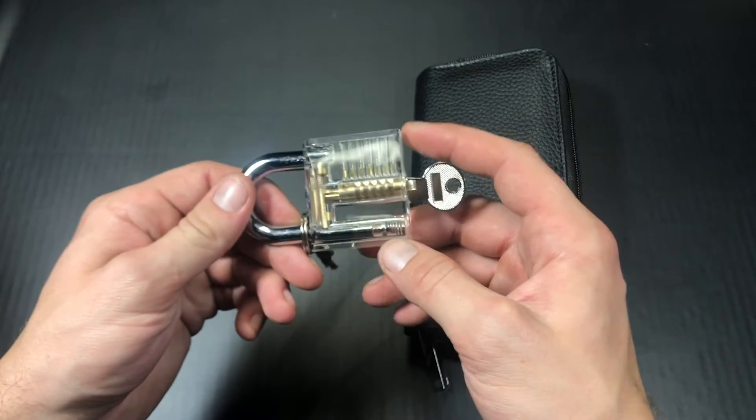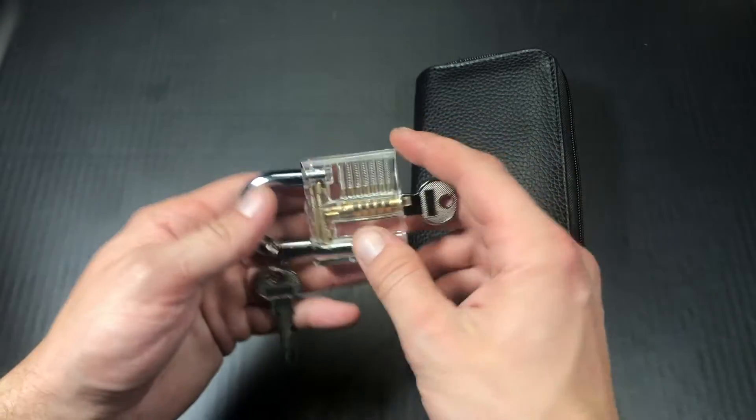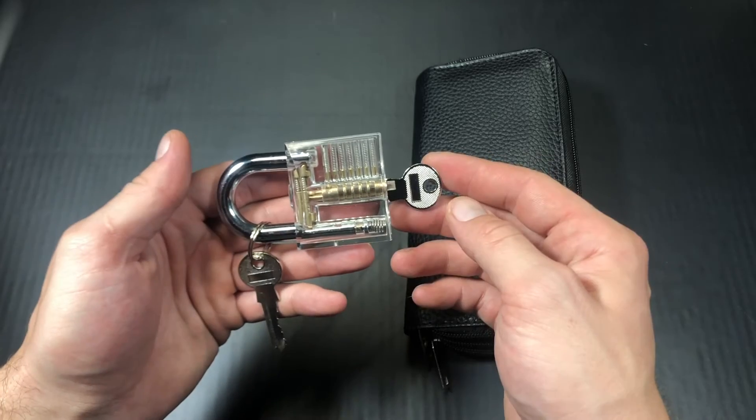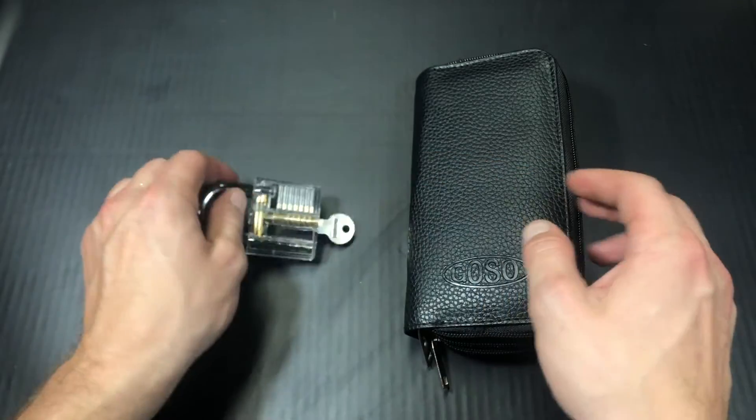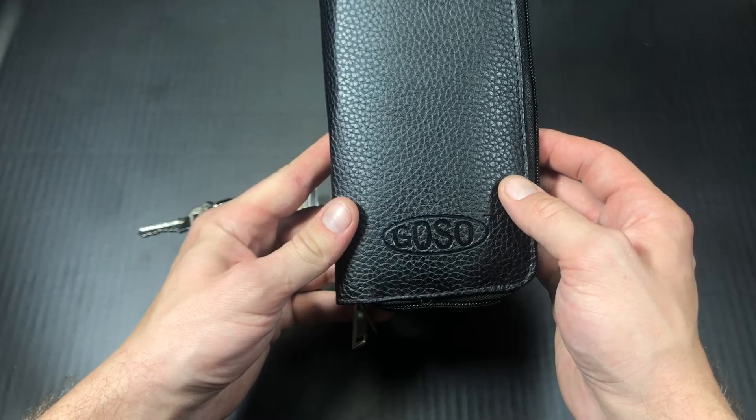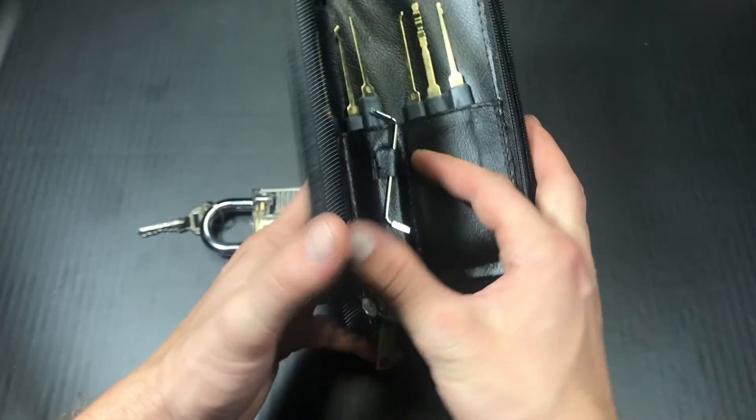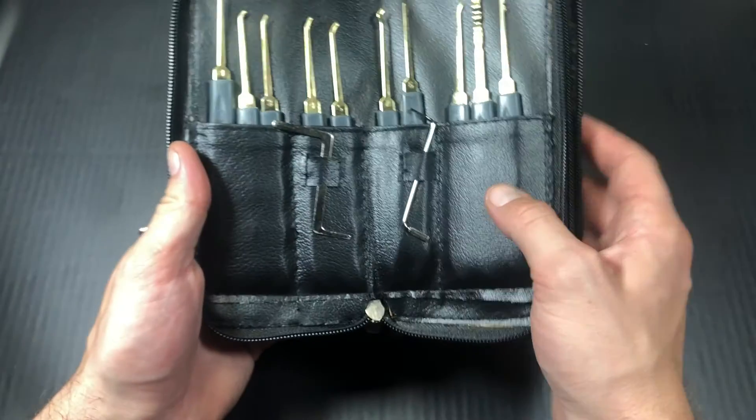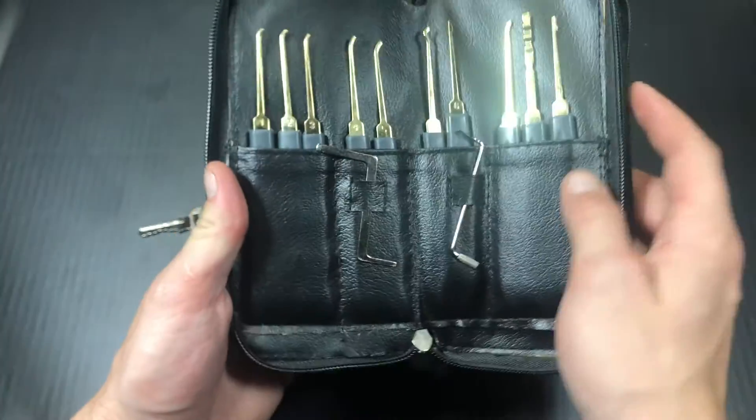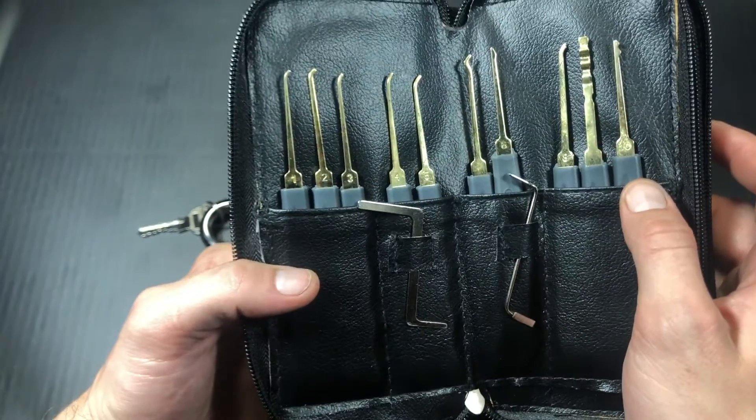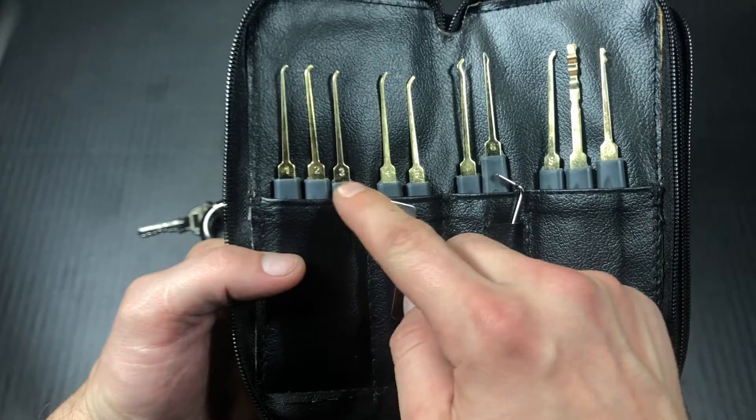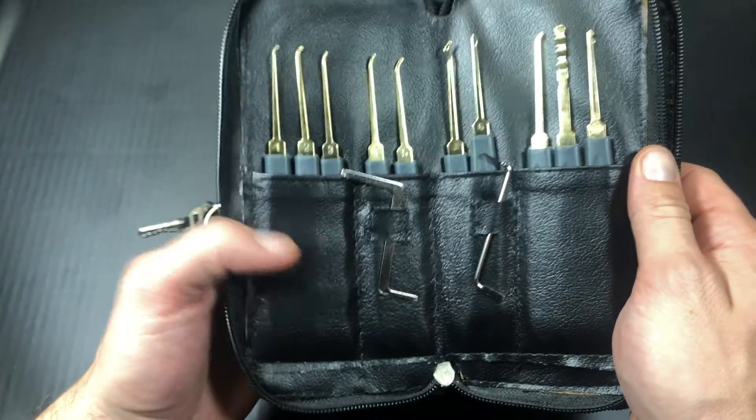So I went on to Amazon and I picked up this practice lock, and I also picked up this 24-piece Goso lock picks lock picking set. It comes with a bunch of different hooks, and as you can see they're numbered one through 24.